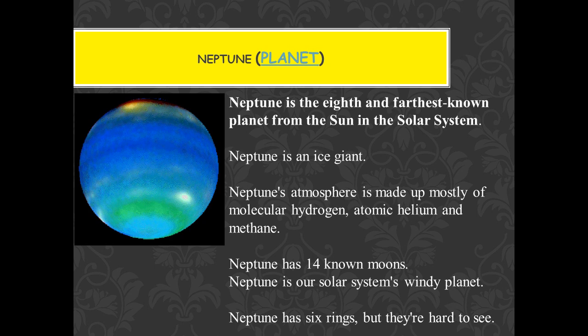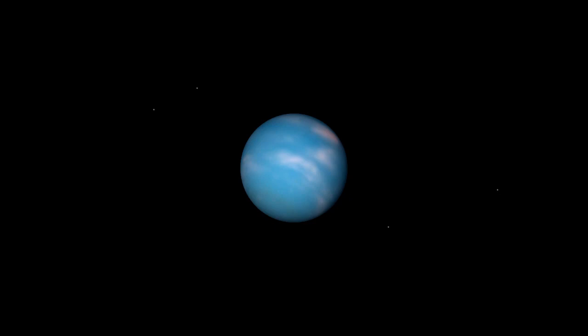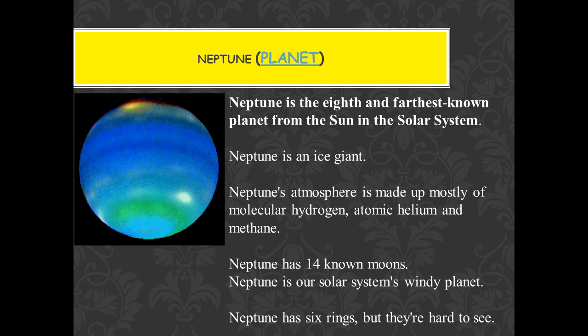Next is the last planet, Neptune. Neptune is our 8th planet and the farthest known planet from the sun. It is called an ice giant. Its Hindi name relates to it being called a windy planet because the wind blows very strongly on its surface. It has 14 moons.